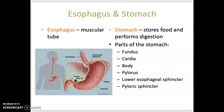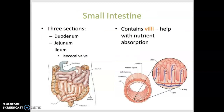The pyloric sphincter is at the lower end, where the stomach meets the small intestine. Peristalsis means coordinated muscle contractions that push food forward through the entire GI tract. This is occurring within the stomach, and by the time food exits the stomach it's called chyme. It's no longer a bolus but now it's liquefied because it's been mixed with digestive enzymes and gastric juice.